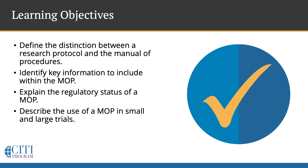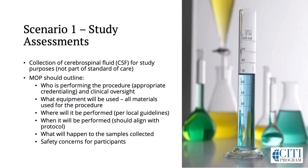And to provide specific examples of a MOP used in small and large trials. In this first example, the research involves the performance of procedures that are not considered standard of care for the study participant. In this case, the study team cannot exclusively rely on SOPs for the performance and scope of the procedure, as it's being done for research purposes. Specific instructions for the performance of the procedure must be provided to ensure consistency.